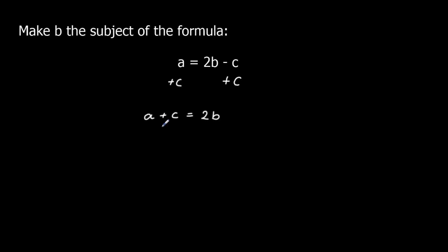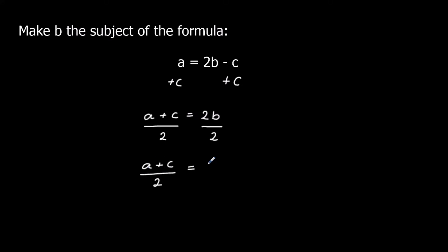So I need to get rid of the two as well to get b by itself. At the moment we've got two times b — 2b means two times b — and to get rid of a times we do a divide. The opposite of times is divide, so we divide both sides by two. That leaves us with a plus c over two equals b, and we can write that the other way around: b equals a plus c over two.